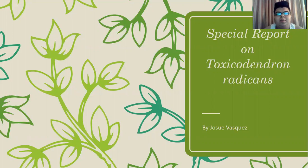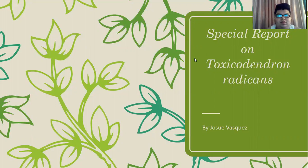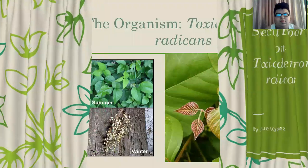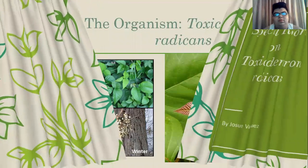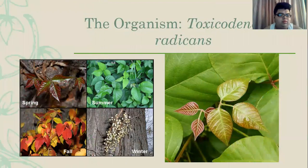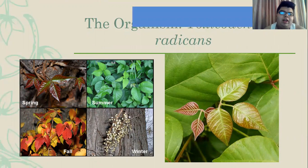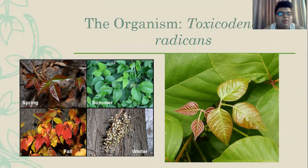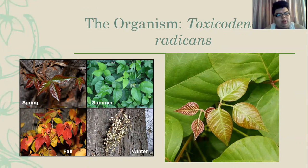Hello, and we have a special report — breaking news about the Toxicodendron radicans, more specifically known as Poison Ivy. Poison Ivy is a plant with pointed leaves, with the shape of the plant being mostly a margin.